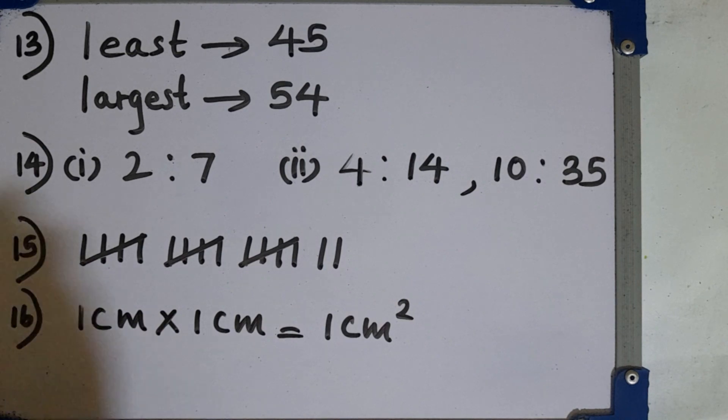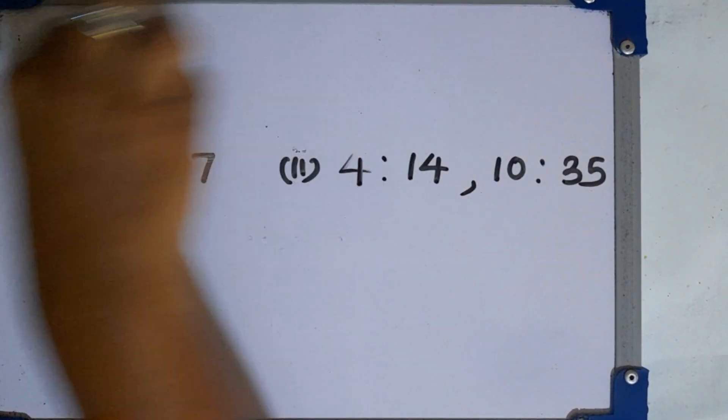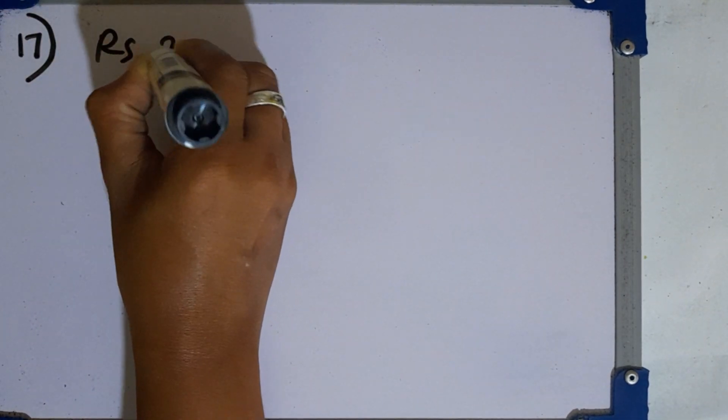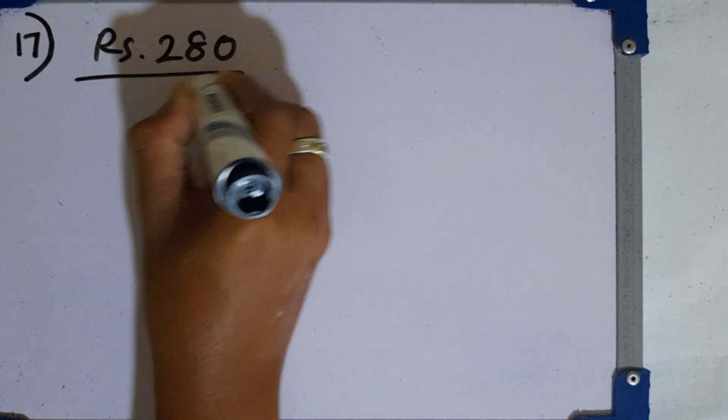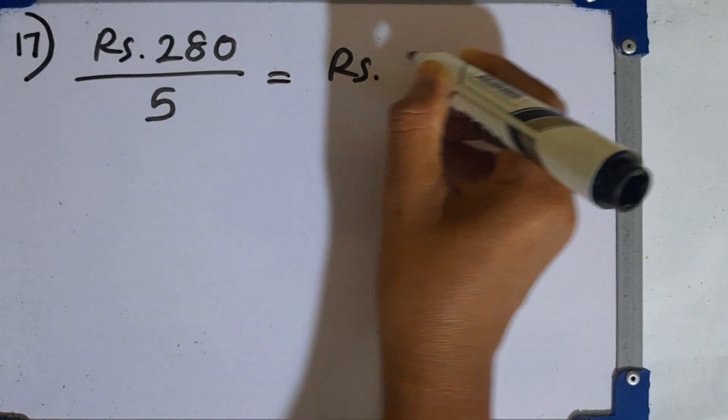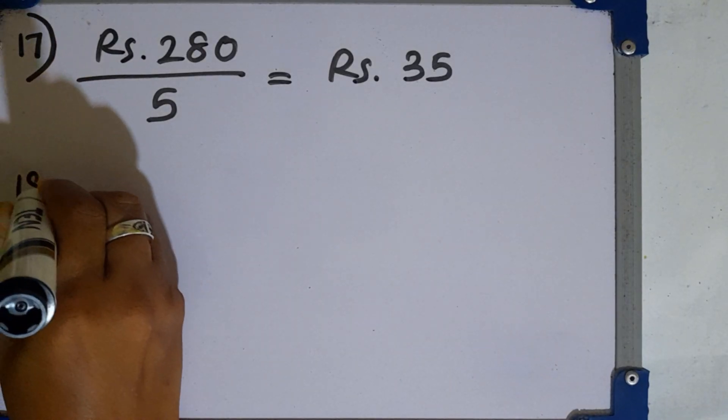Question number 17. The price of 8 exercise books is 280. Find the price of one book. We can find 280 divide by 8. Then the price of one book is 35 rupees.